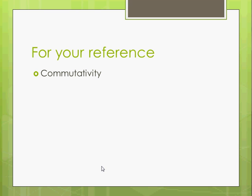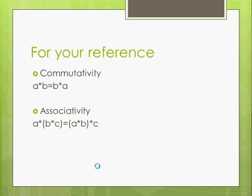So just a couple things to note for your reference. Commutativity, in case you don't remember, that means we can flip the order. We can rewrite them, we can just switch them. A star b is b star a. Associativity, another important one, means you can change the order in which you do things. You can regroup. In other words, a star b star c equals a star b star c. So those are important to remember.